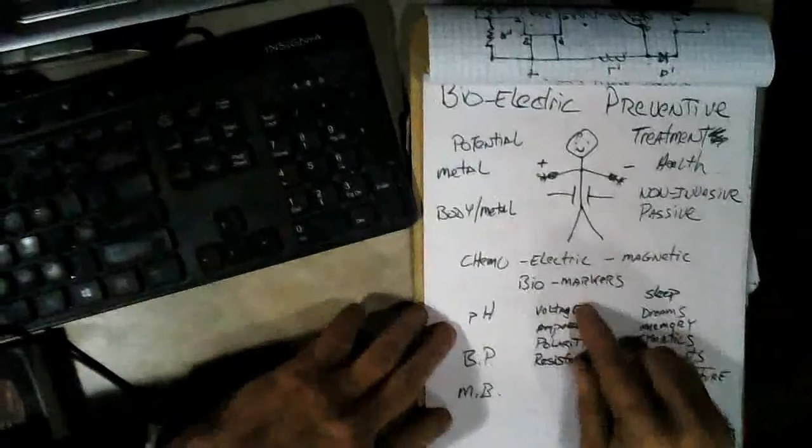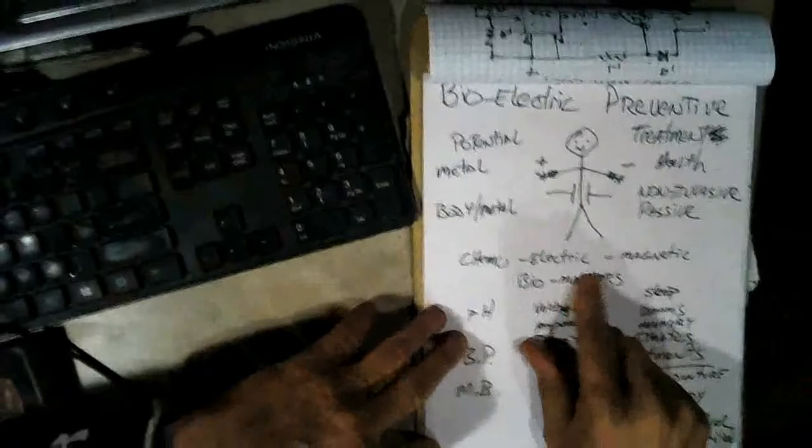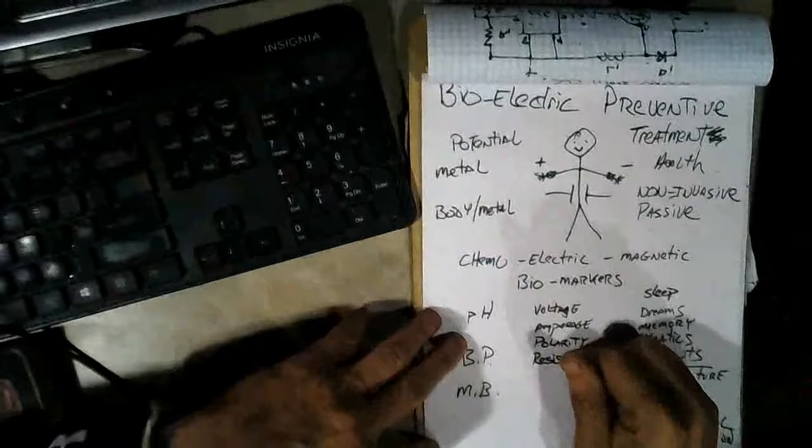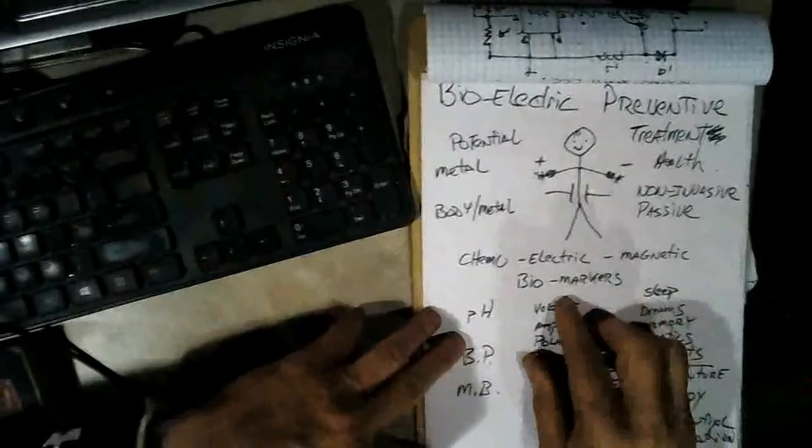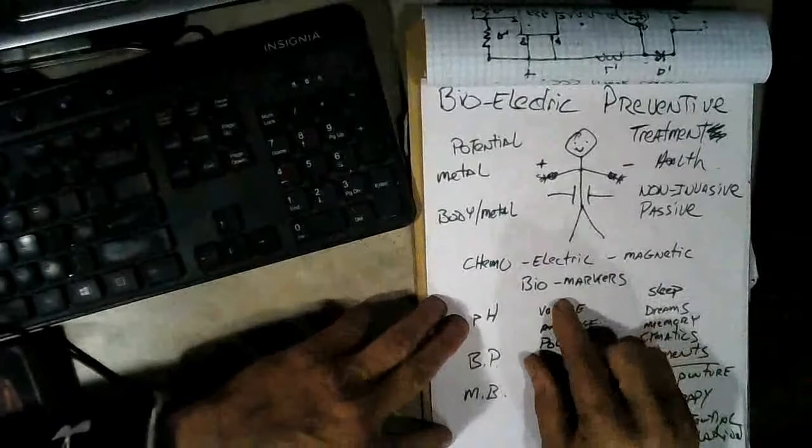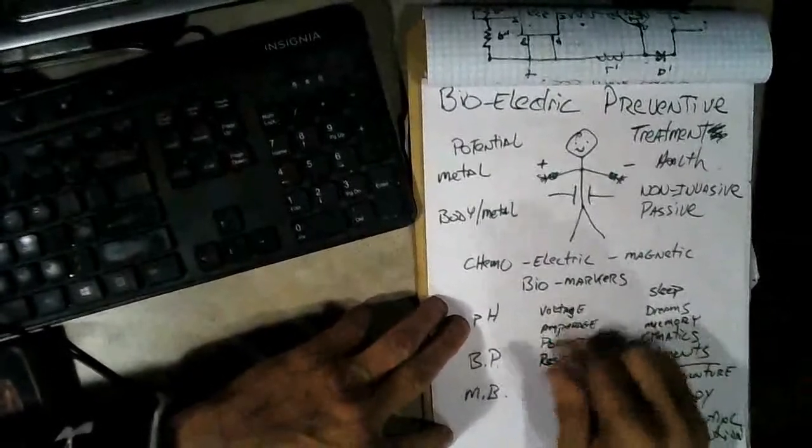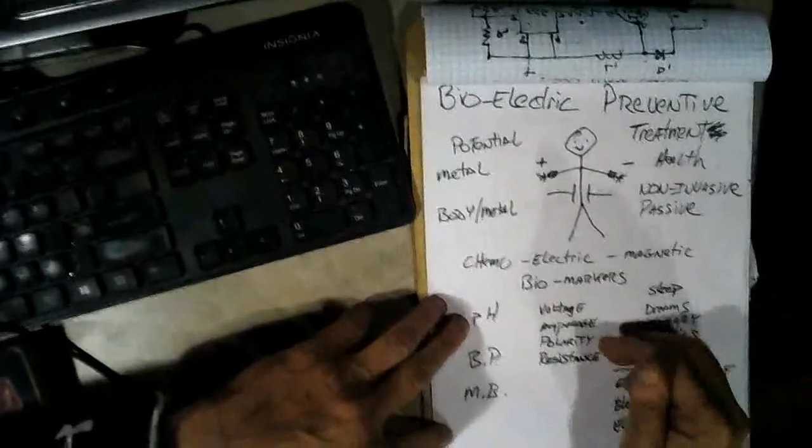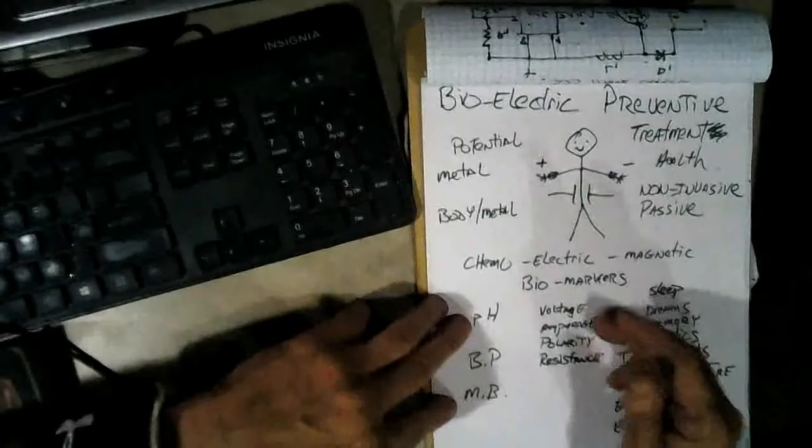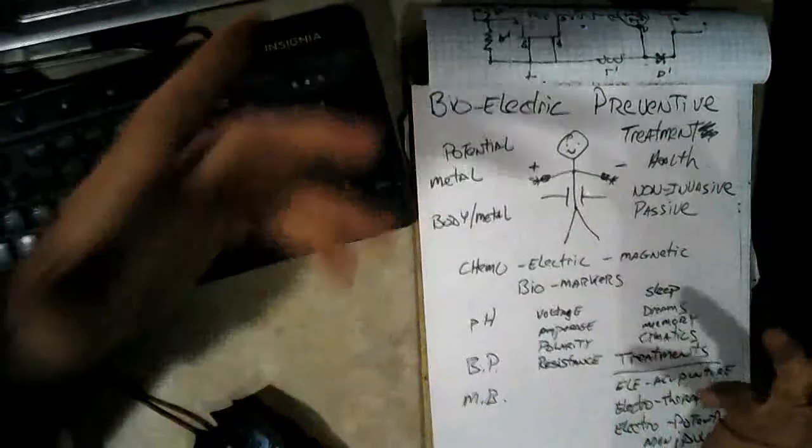So we can use voltage, amperage, polarity, resistance. We can use all of these measurements that we can make with a simple multimeter. You can use all of those things as gauges of potential health problems and as a gauge of potential health. If your metrics are all low, then you're probably sick and on your way out. Whereas if your metrics are improving, then you're probably getting healthier.